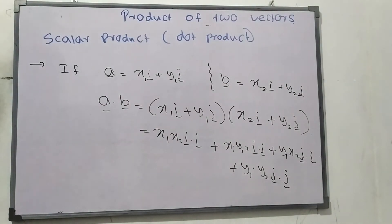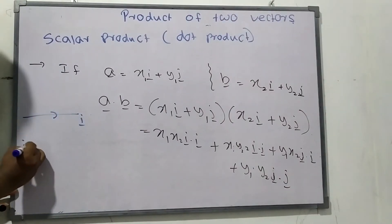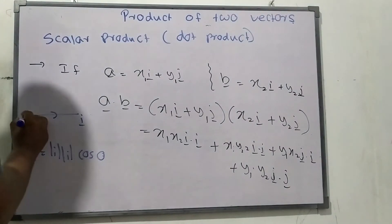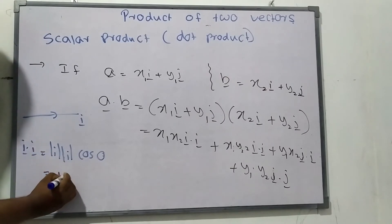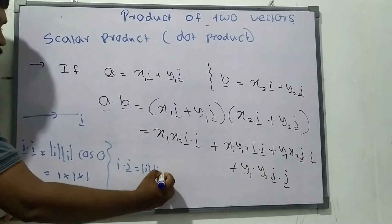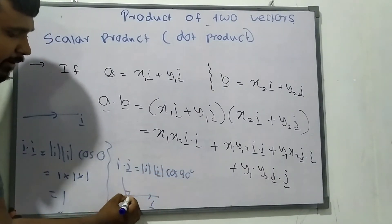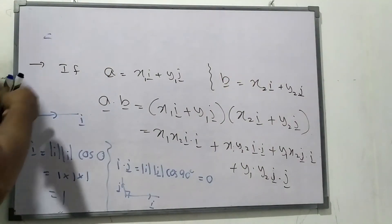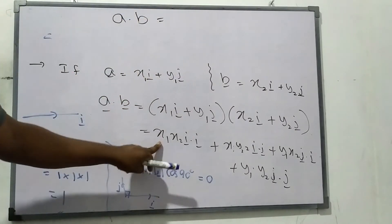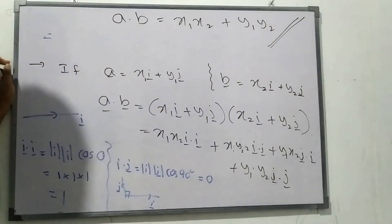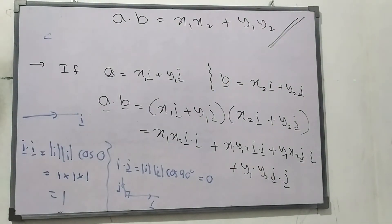What is i dot i? The i-axis is the x-axis. i dot i equals magnitude of i times magnitude of i times cos 0, which equals 1 times 1 times 1 = 1. What about i dot j? i and j are perpendicular to each other, so i dot j equals magnitude i times magnitude j times cos 90 = 0. Therefore the middle terms disappear, and A dot B equals x1x2 plus y1y2.